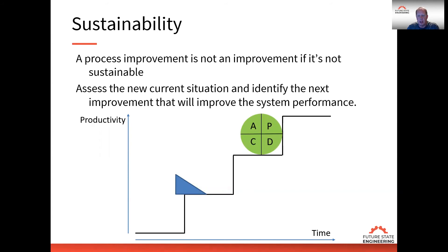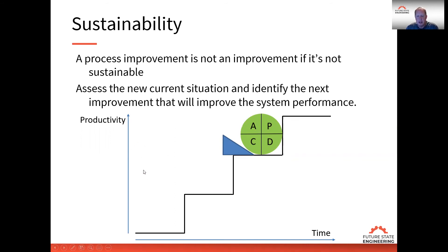We move up to the next level of performance, and the process improvement should improve our KPIs. If it's not improving the KPIs of the organization, then is it really an improvement? We go through that process again, putting that wedge in place so we can sustain the gain, and we systematically go through the PDCA cycle again and again, each time getting step improvements in overall system performance.